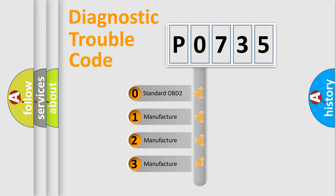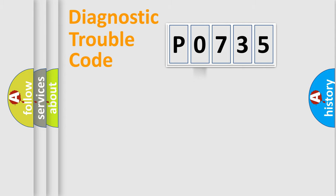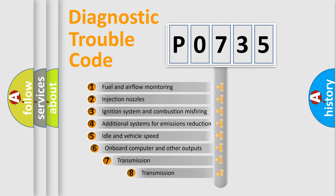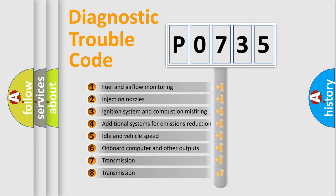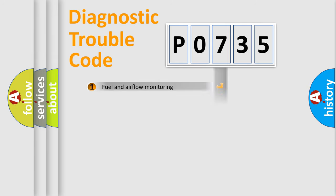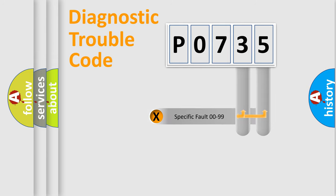If the second character is expressed as zero, it is a standardized error. In the case of numbers 1, 2, 3, it is a manufacturer-specific error. The third character specifies a subset of errors. The distribution shown is valid only for the standardized DTC code. Only the last two characters define the specific fault of the group.